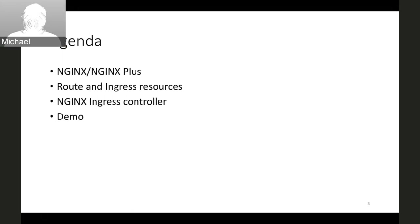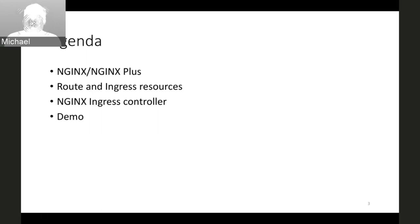Here is our agenda for today. We start with a discussion about NGINX and NGINX Plus, and why they are relevant for load balancing on OpenShift. Then we will compare route and Ingress resources — the OpenShift native load balancing resource and the Kubernetes native load balancing resource. Then we will introduce NGINX and NGINX Plus Ingress controller and show how to deploy and use it in a live demo.